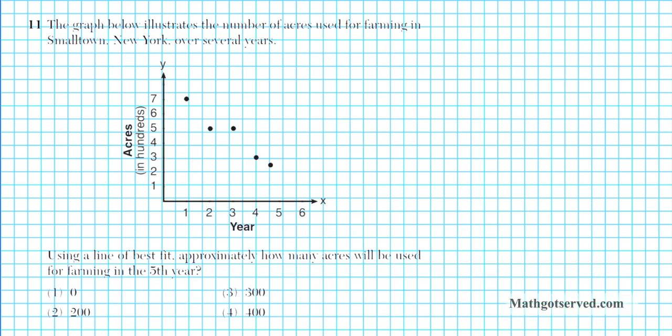Let's take a look at question number 11. It says the graph below illustrates the number of acres used for farming in Smalltown, New York over several years. Using a line of best fit, approximately how many acres will be used for farming in the 5th year?